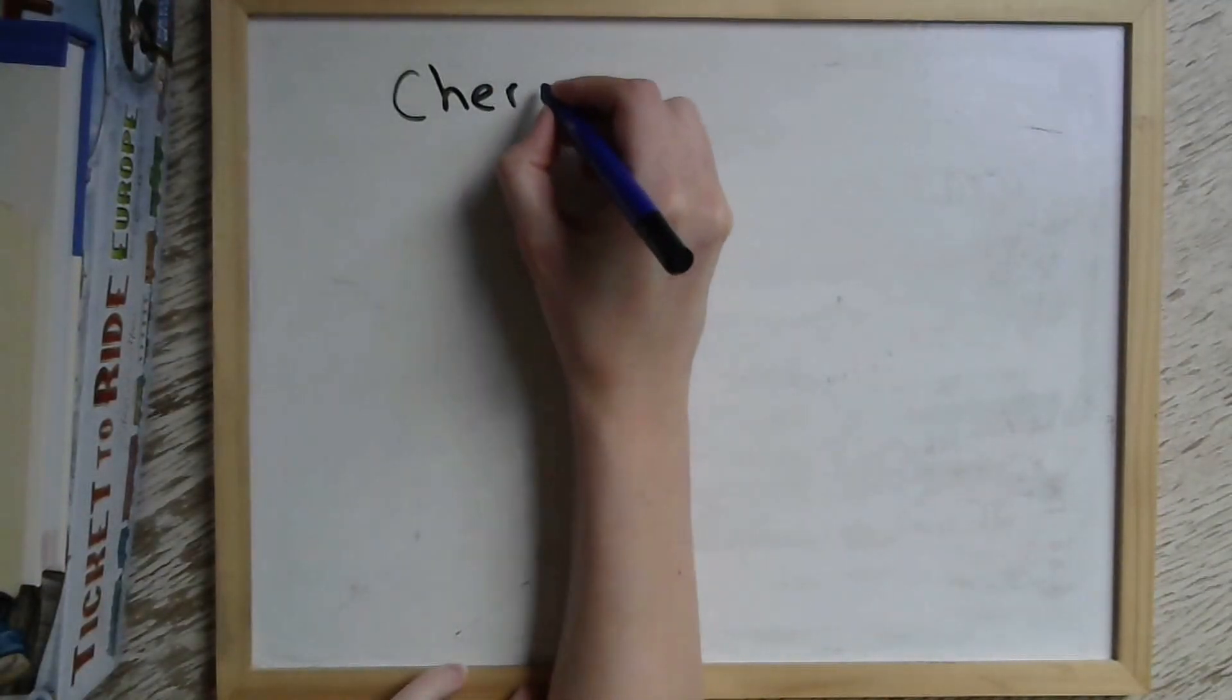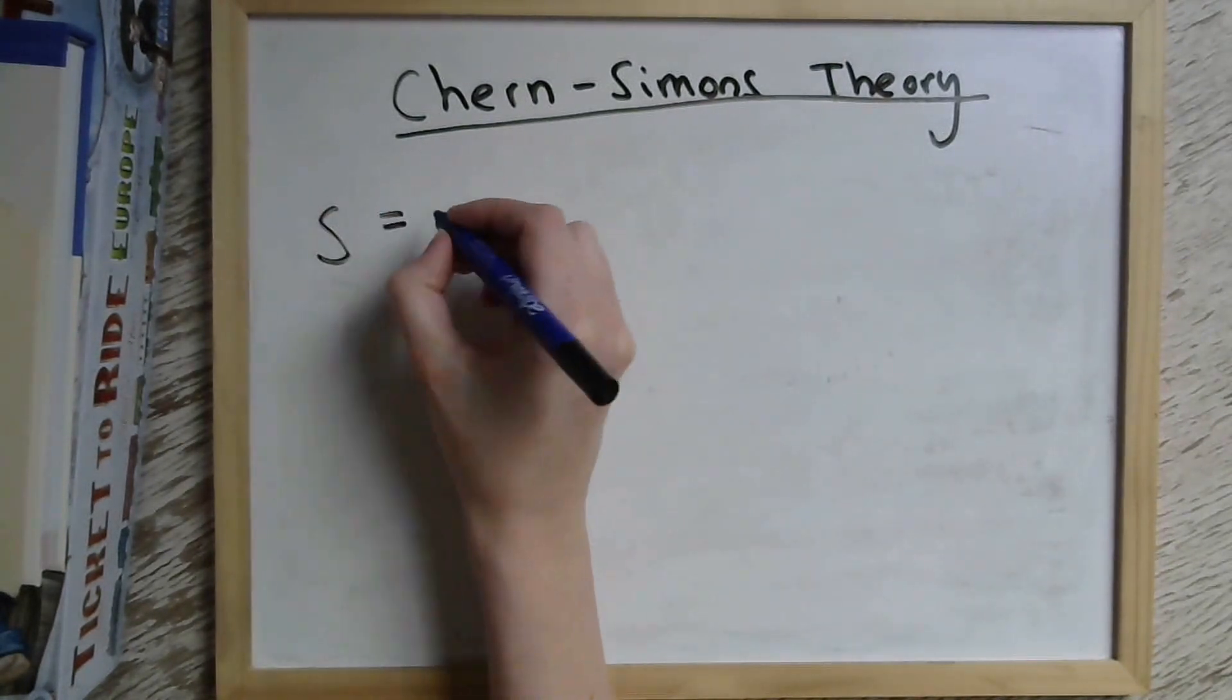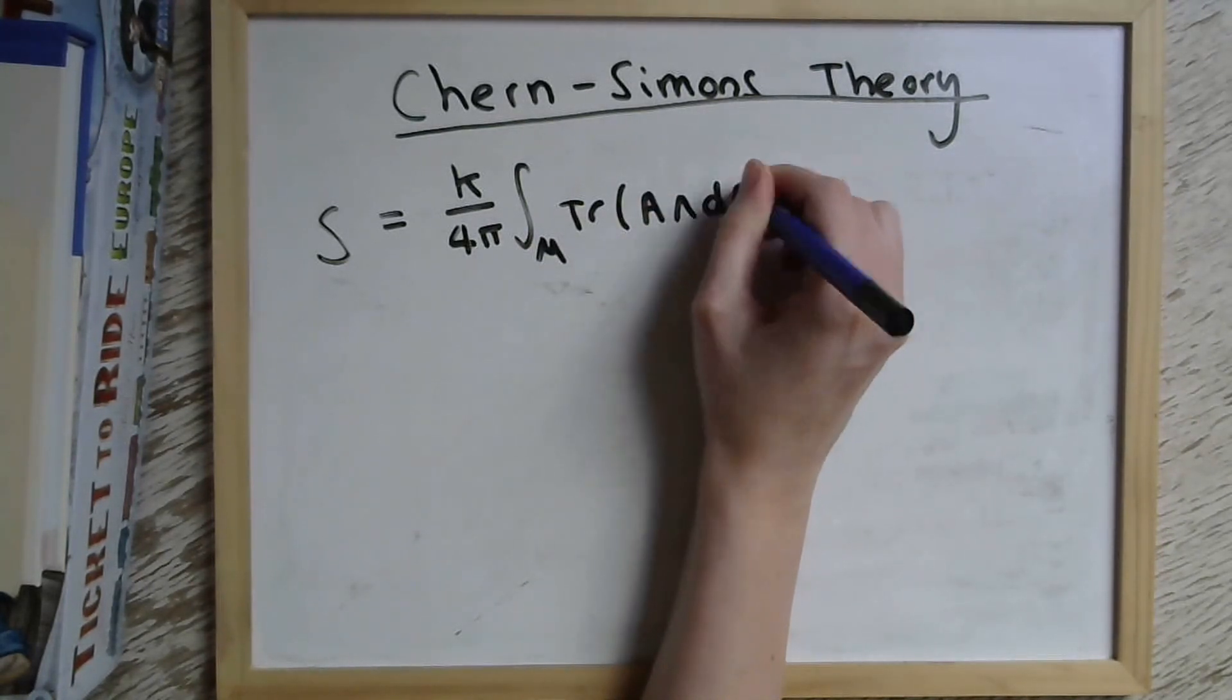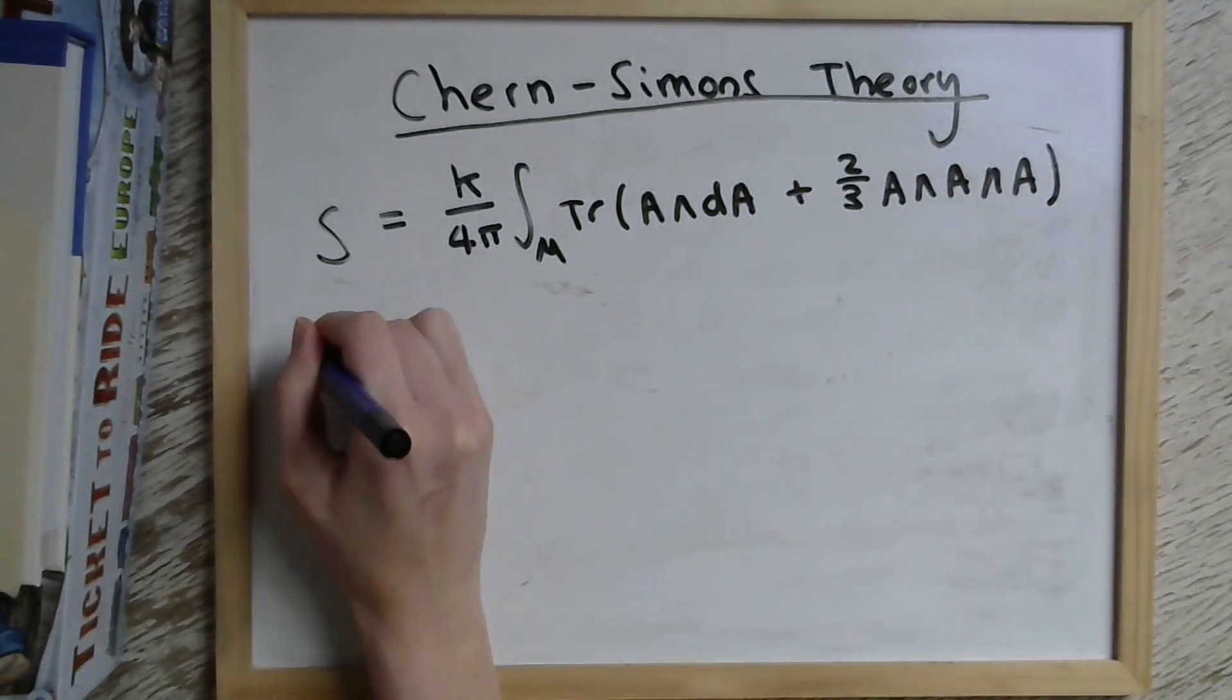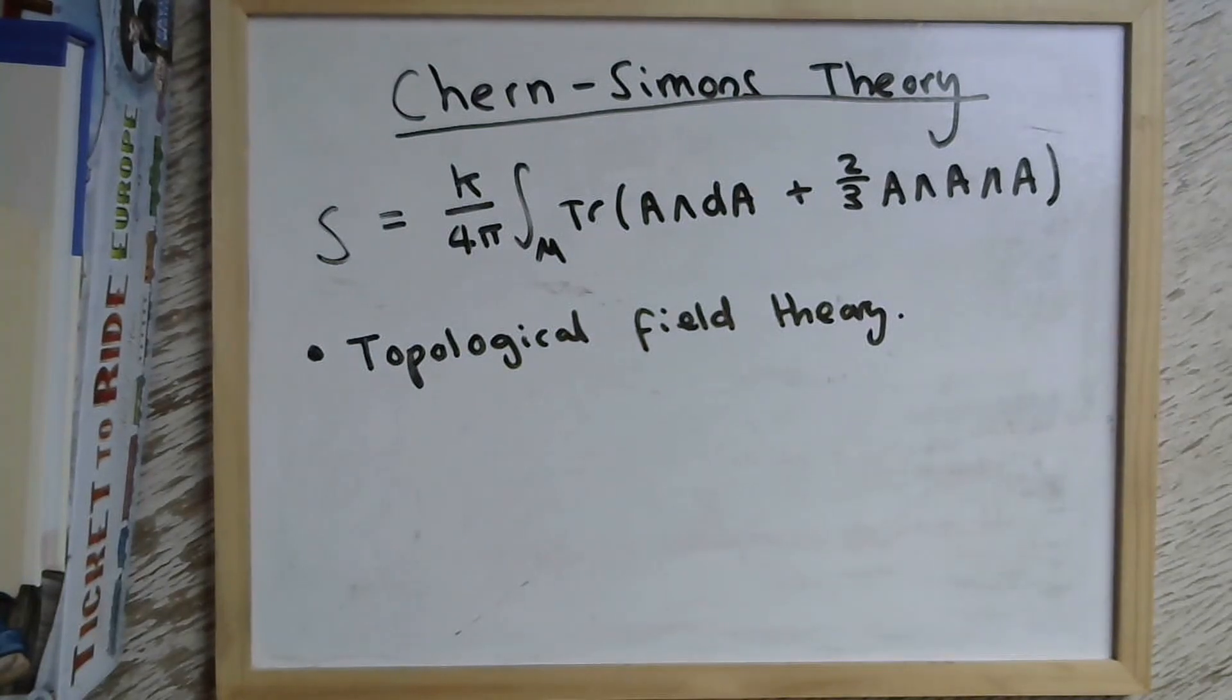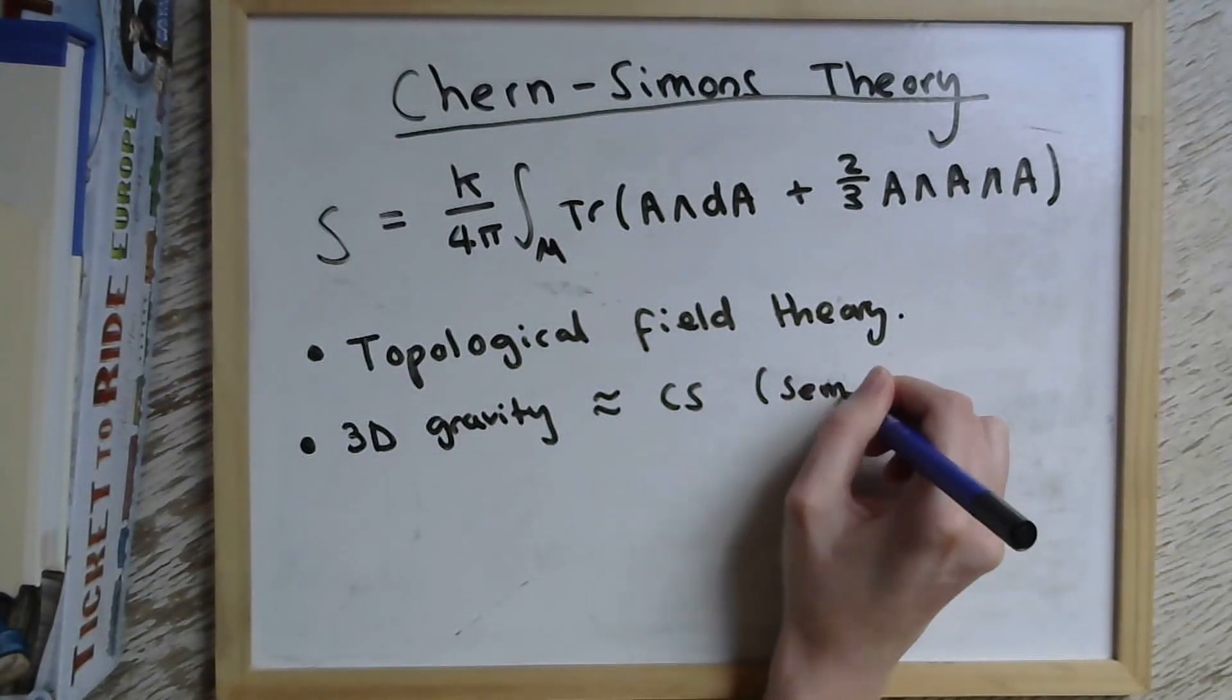So this brings us on to why we're doing all of this in three dimensions in the first place. And that's because we'd like to exploit some of the properties of Chern-Simons theory, which is a three dimensional field theory that looks like this. It's got a coupling constant K that's called the level and it's over three dimensional manifold M. There are a couple of reasons why Chern-Simons theory is useful to us. The first is that it's a topological quantum field theory, which means that it only depends on the manifold M that we put it on. Secondly, it's got a very close relationship with 3D gravity. They're actually equivalent, at least in a semi-classical sense, which is very useful for us.